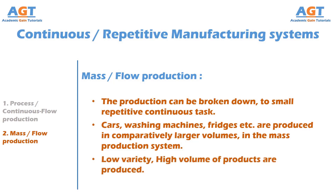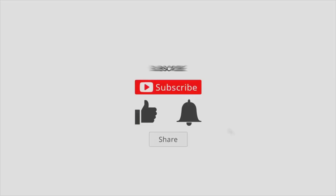So, these are the two types of production or manufacturing processes that fall under the continuous manufacturing system.